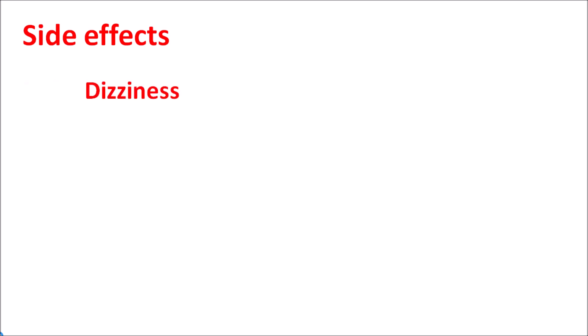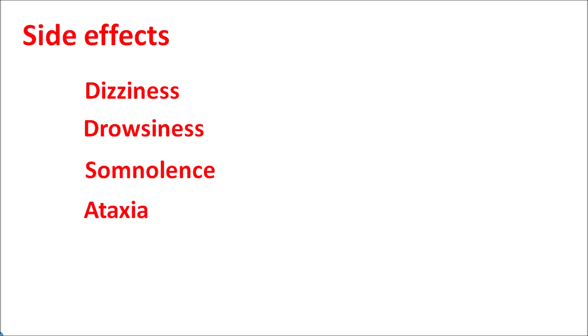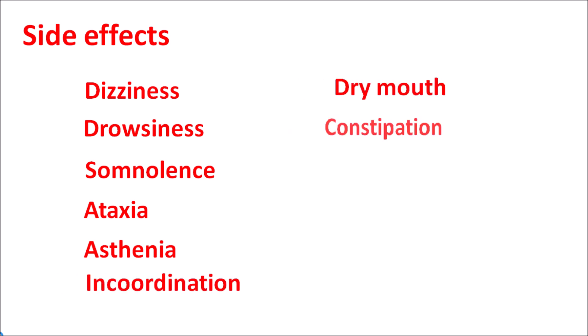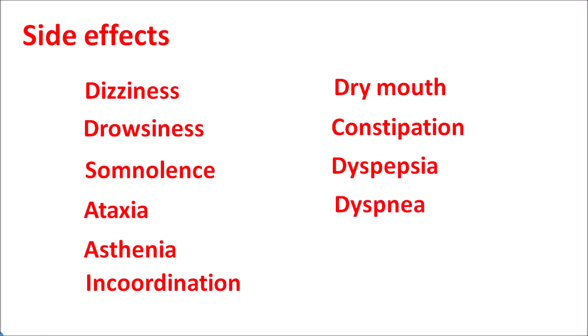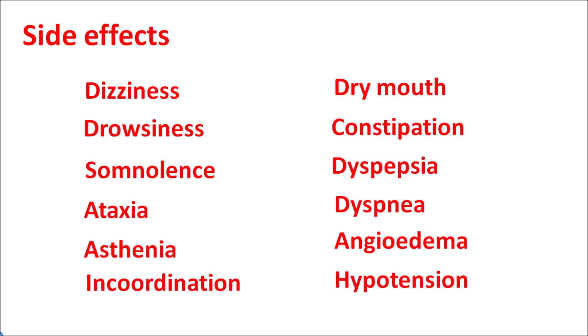The important side effects of gabapentin are mainly related to its central actions: dizziness, drowsiness, somnolence, ataxia, loss of balance, asthenia, and incoordination. Other side effects include dry mouth, constipation, dyspepsia, dyspnea, and hypersensitivity reactions such as angioedema and hypotension.